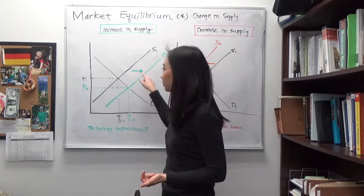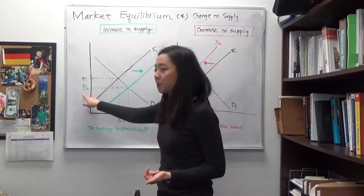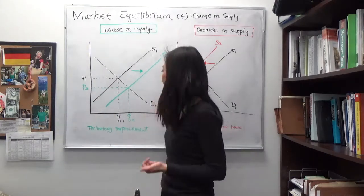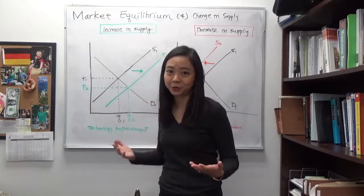Notice that when the supply curve shifts to the right, you will have a lower price and a larger equilibrium quantity. So that's what happens when there is an increase in supply.